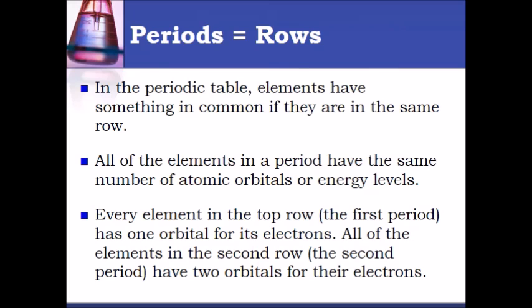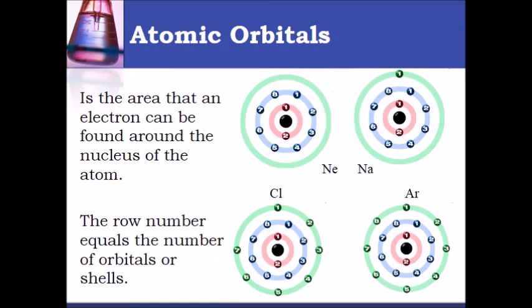Let's take a look at some pictures. If you consider the black circle in the middle to be the nucleus of the atom and that pink ring around it that has the numbers one and two in it, that's the first orbital or what we call a shell where the electrons stay. Look at all four of these elements here, neon, sodium, chlorine, and argon.